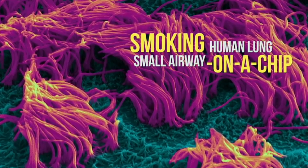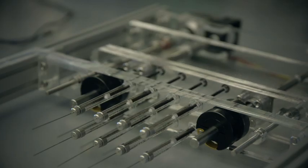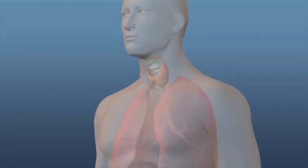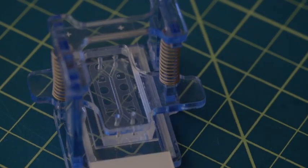The first component is a macrorespiratory. A macrorespiratory is kind of meant to mimic the ribcage and diaphragm, so when you inhale or exhale, you need to pull in air and push it out. The second component is the small airway chip itself.